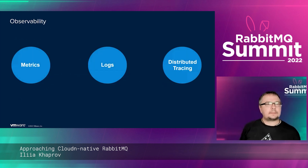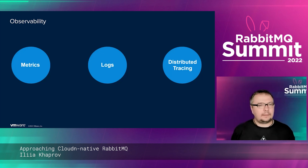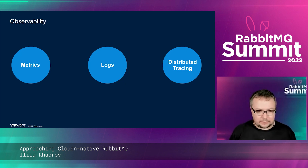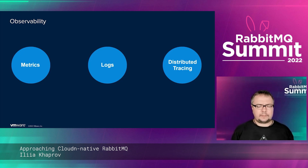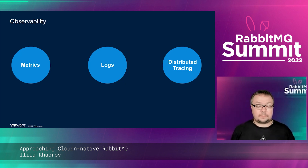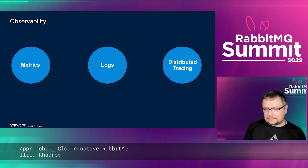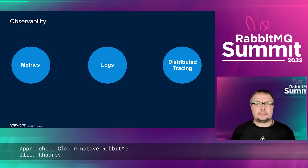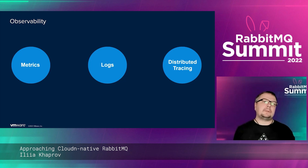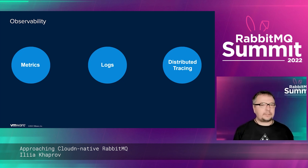The next topic is observability — the infamous three pillars: metrics, logs, distributed tracing. We have tons and tons of Prometheus metrics, the number is growing, and we have dashboards for everything, some of them rather intimidating, like allocators. One thing we don't share publicly is our approach to alerts — this is a place where we'd like to learn from the community. If you do alerts on RabbitMQ metrics, please let us know.